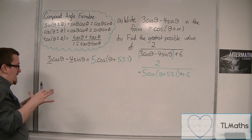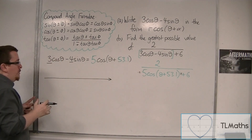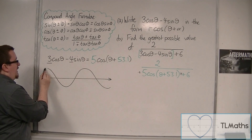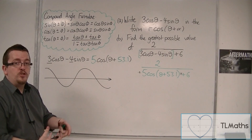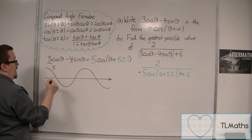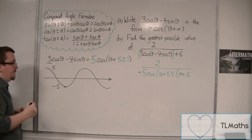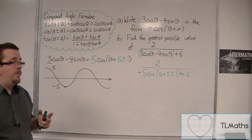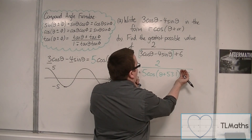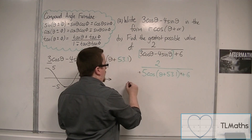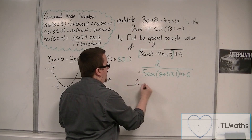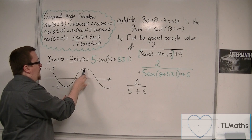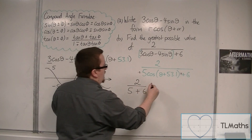It's all going to come down to the largest and smallest values of the cosine expression. If we do a quick sketch — we don't need to sketch precisely — a cosine curve has a maximum value of 5, because it's been stretched parallel to the y-axis by a factor of 5, and a minimum of minus 5. So the expression ranges between 5 and minus 5. When this is at its maximum of 5, we would have 2 over (5 + 6), which gives 2 over 11.